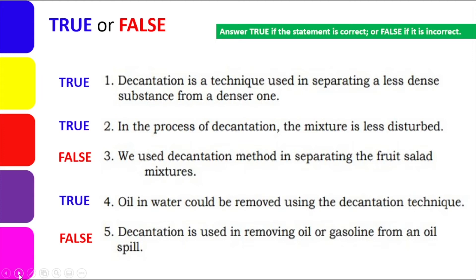Number 2 is True because in the process of decantation, you need the mixture to be less disturbed. If it is disturbed, the substances have not yet separated. So let it settle first. Number 3 is False because the statement says we use decantation to separate fruit salad mixtures. If we are talking about fruit salad already in a bowl, of course decantation or pouring out is not applicable. But if it is canned fruit salad still with its liquid part, then decantation is possible. So the question needs to be clear.